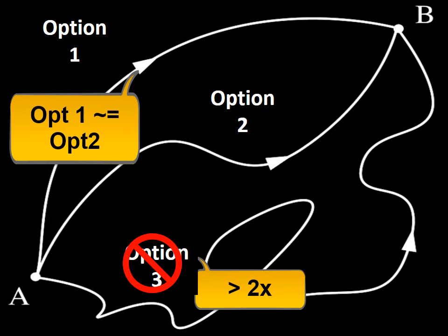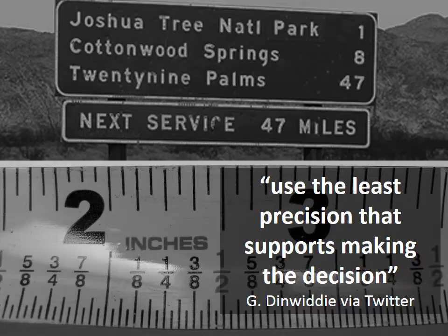Toss a coin, find out which option has an added benefit that the other option doesn't have. Often the quickest way to rule out options is just to know it's an outlier.